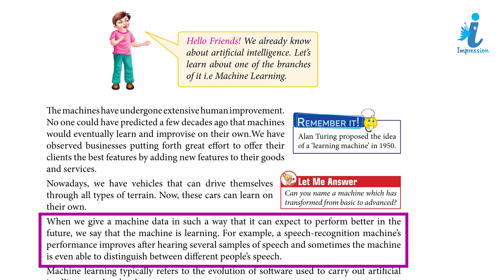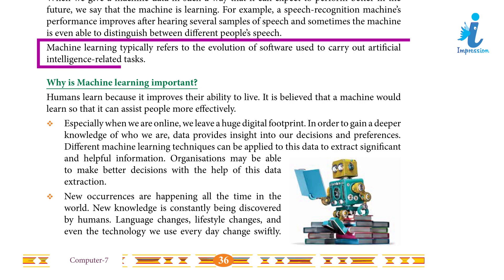For example, a speech recognition machine's performance improves after hearing several samples of speech, and sometimes the machine is even able to distinguish between different people's speech. Machine learning typically refers to the evolution of software used to carry out artificial intelligence-related tasks.